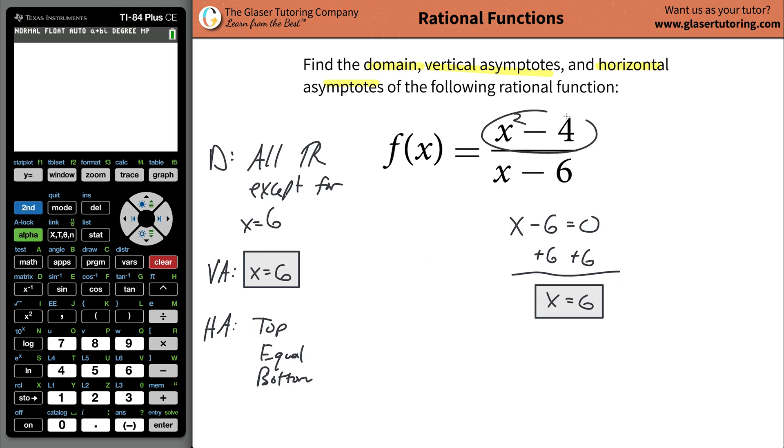If this were a two, this would be a top heavy. And if this were a two, for example, this would be a bottom heavy function. Now, when you have an equally heavy function, what you're going to do in order to find the horizontal asymptote is this.